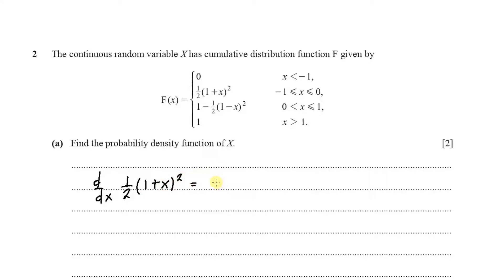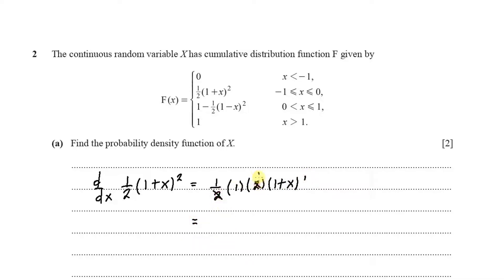Doing that, I get one half of: differentiating (1 plus x) gives 1, I bring down the 2, and then I have (1 plus x) to the power of 2 minus 1, which is just 1. So this gives us — where these 2s cancel out — 1 plus x.